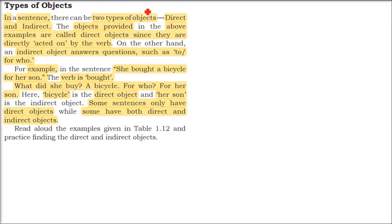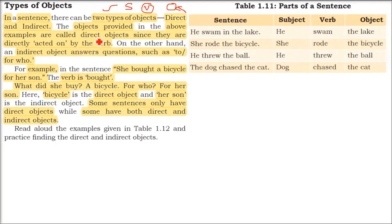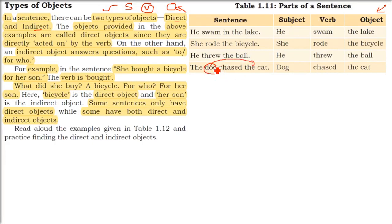What are types of objects? Almost every sentence in English has a subject which does something, an object on whom it acts, and a verb which is the action. In a sentence there are two types of objects: direct object and indirect object. The examples we saw — the lake, bicycle, ball, cat — are direct objects, because the subject is directly working on them. The dog is chasing the cat, so cat is being acted upon directly — that is a direct object.